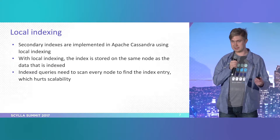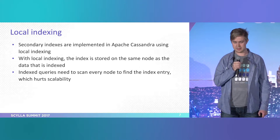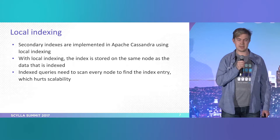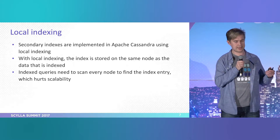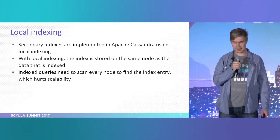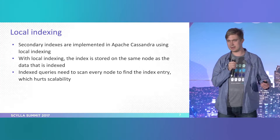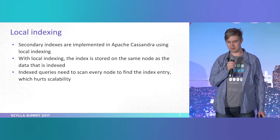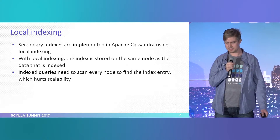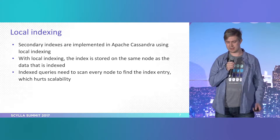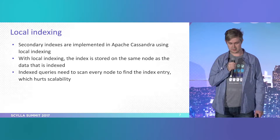Local indexing is basically how Cassandra does it. Local indexing means that the index is stored on the same node as the data that is getting indexed. What Cassandra does is it has this hidden node-local table, which contains basically the primary keys of the indexed data — so the partition key and clustering columns.